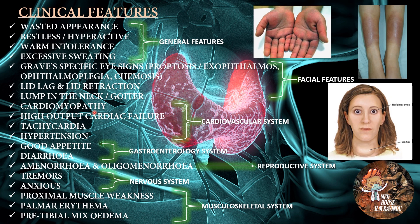Clinical features related to the cardiovascular system are cardiomyopathy, high output cardiac failure, tachycardia, and hypertension. Clinical features related to the gastroenterology system are good appetite and diarrhea. Amenorrhea and oligomenorrhea are clinical features related to the reproductive system. Tremors and anxiety are clinical features related to the nervous system. Clinical features related to the musculoskeletal system are proximal muscle weakness, palmar erythema, and pretibial myxedema.